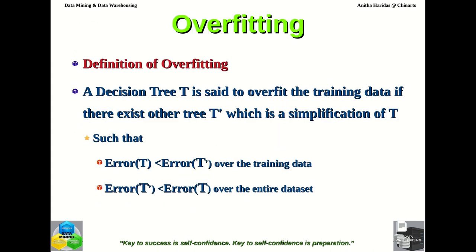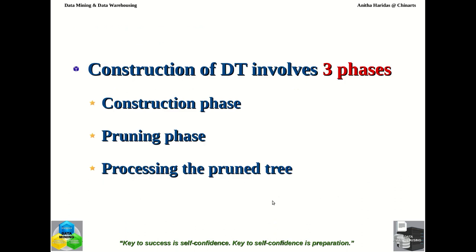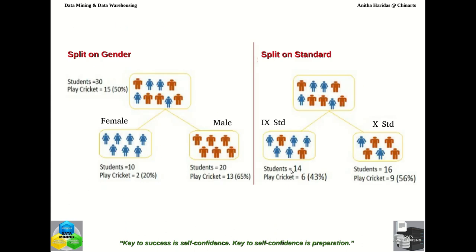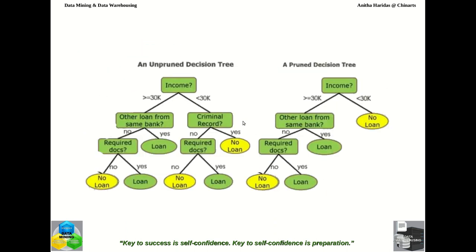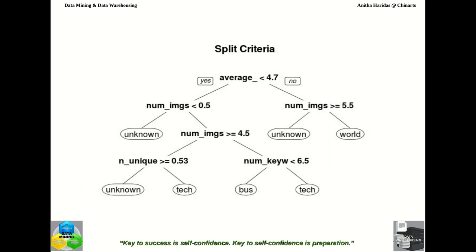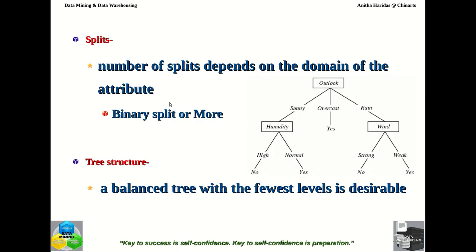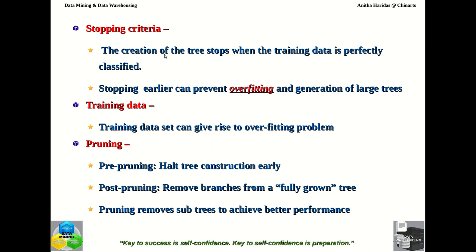In summary, in this video we have seen how to construct the decision tree, including the three different phases of decision tree construction. We have seen what pruning is and what the overfitting problem means. We also covered the issues faced during construction of a decision tree: the splitting criteria, splitting attribute, number of splits, tree structure, stopping criteria, training data, and the pruning process. In the upcoming video, we will discuss how to select the best splitting attribute and best splitting criteria.